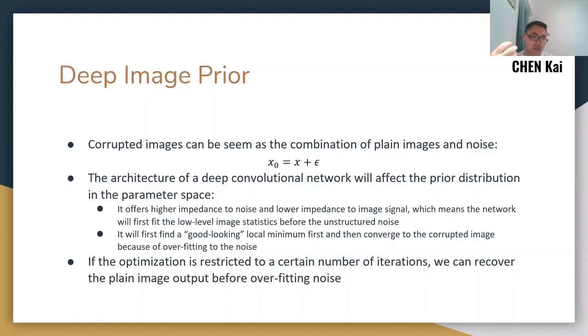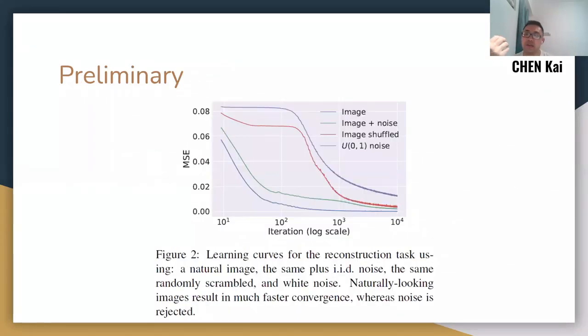It will offer higher impedance to the random noise and lower impedance to the image signal. It means that the network will first fit the lower-level image statistics before the obfuscated noise. So the network will actually try to find a good-looking numerical minima first, and then will try to converge to the corrupted image because of overfitting. So if we can somehow restrict the optimization process to a certain number of iterations, then we can actually recover the plain image output before the network overfits to noise.